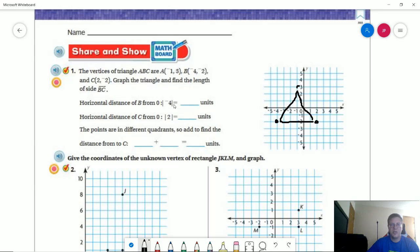Let's see. So horizontal distance from B. So we have 4 units because our absolute value of negative 4 is 4. Absolute value of 2 is 2. So we are going to add because we are in different quadrants. So that's going to give us 6 units.